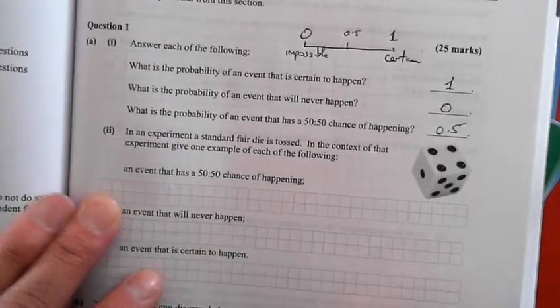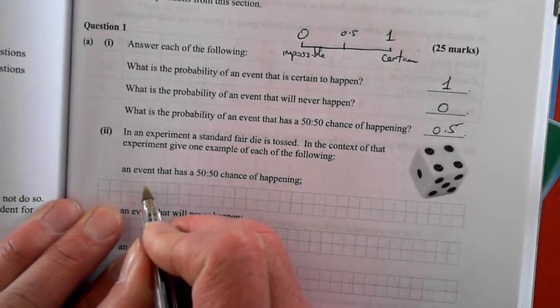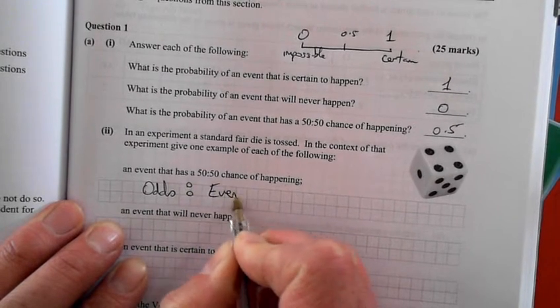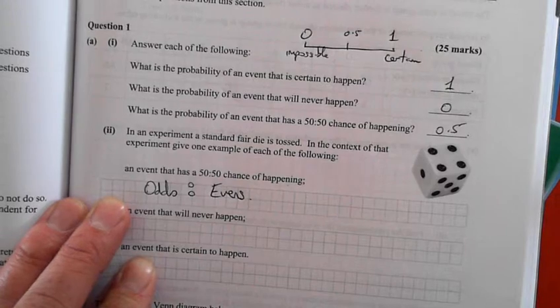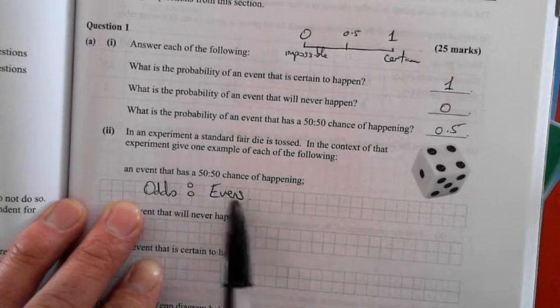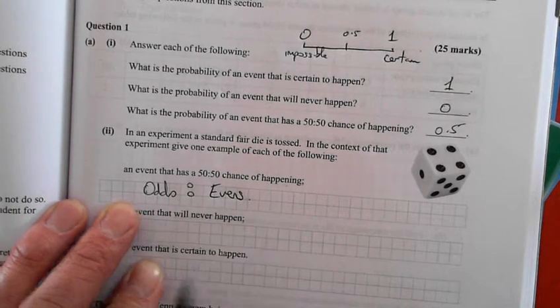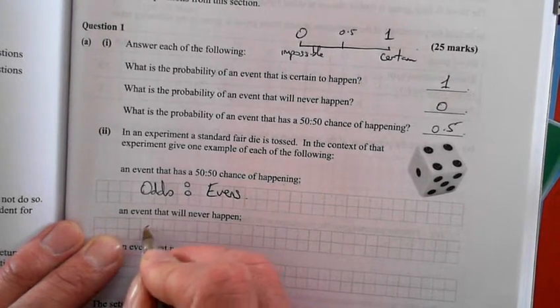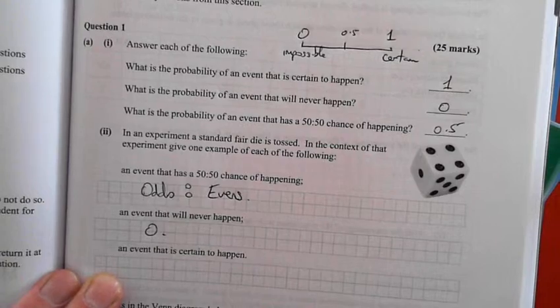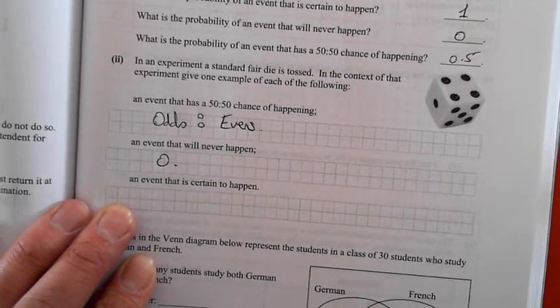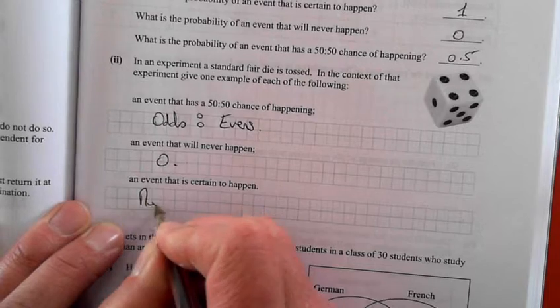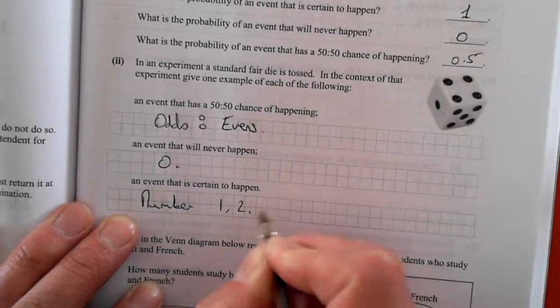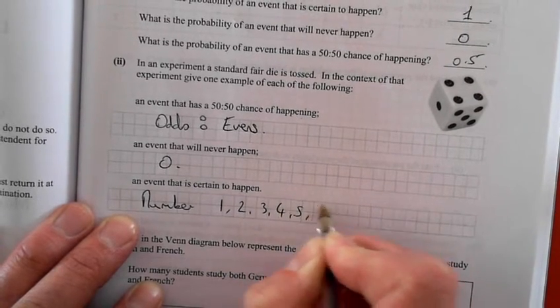Give an example. Odds or evens. So one, three, five or two, four, six. That's it. An event that will never happen: zero. An event that is certain to happen: rolling one, two, three, four, five, or six.